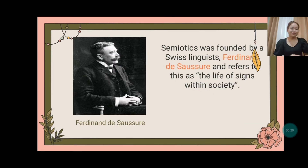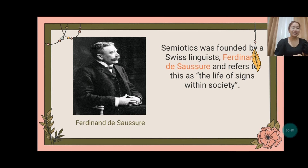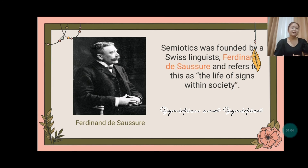Semiotics was founded by a Swiss linguist named Ferdinand de Saussure, who referred to semiotics as the life of signs within society. Saussure was one of the first to produce a semiotic theory in the early 1900s. He stated that a sign is made up of two parts: the signifier and the signified. A signifier is an emotion, gesture, image, pattern, or event that conveys meaning in communities, while the signified is the concept that a signifier refers to — the meaning it conveys. Therefore, for a sign to be considered a sign, it must have both a signifier and a signified.